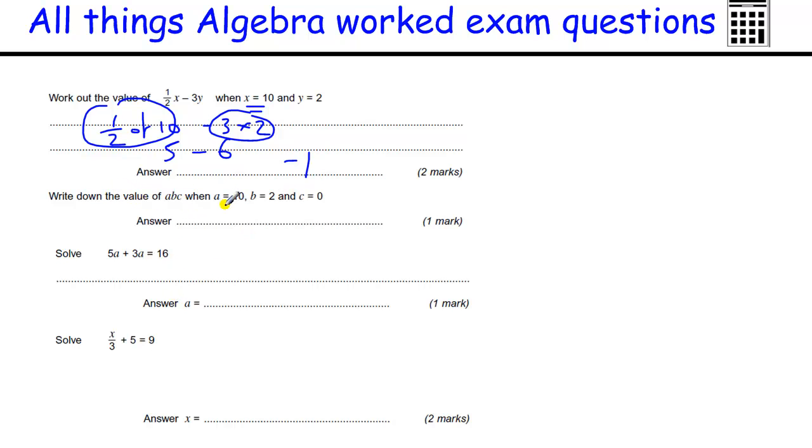Write down the value of ABC. A is 10. ABC means A times B, which is 2, times C, which is 0, and anything times 0 is 0.